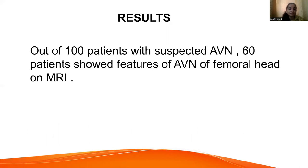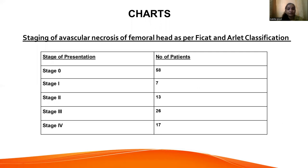Coming to the results: out of 100 patients with suspected AVN, 60 patients showed features of AVN of the femoral head on MRI. The chart shows the stage of presentation: stage zero had 58 patients, stage one had 7 patients, stage two had 13 patients, stage three had 26 patients, and stage four had 17 patients.